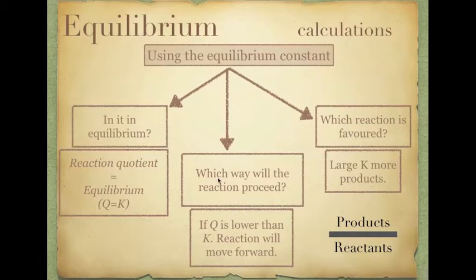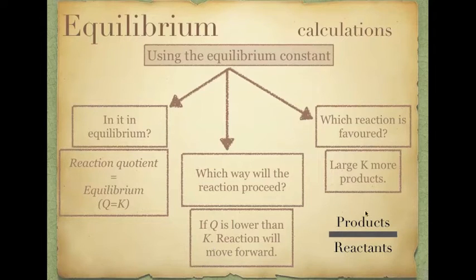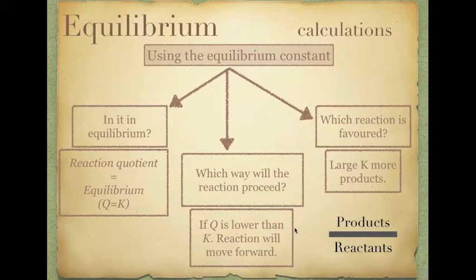The equilibrium constant can also tell you which way the reaction will proceed — whether it will go forward or backwards. If Q is lower than K, the reaction will proceed forward because it will try to make more products to reach the K value. Products over reactants is what Q represents. So if your reaction quotient Q is lower than K, that means we have more reactants than products, and therefore the reaction will proceed forward to make more products.